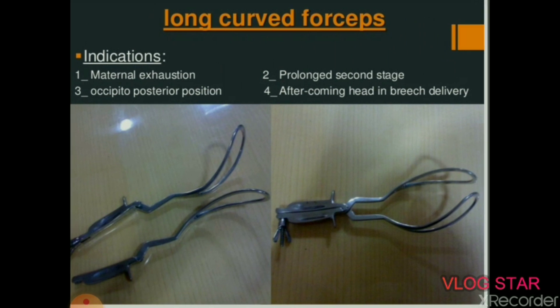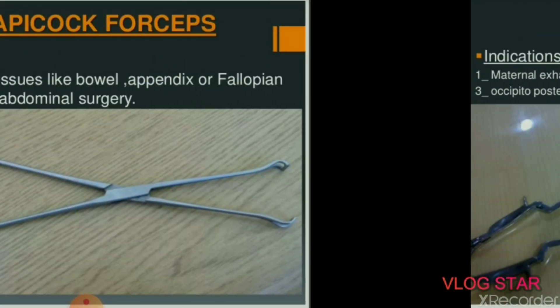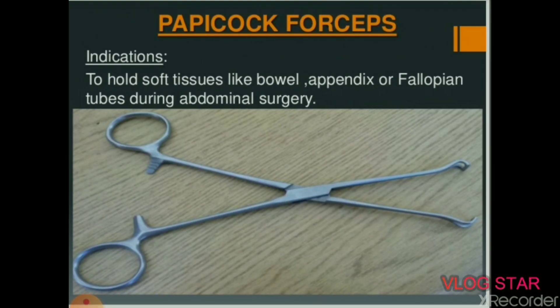Next instrument: long curved forceps. Indications: maternal exhaustion, prolonged second stage, occipito-posterior position, and after-coming head in breech delivery. Next instrument is Pappy Cox forceps, used to hold soft tissues like bowel, appendix, or fallopian tubes during abdominal surgery.